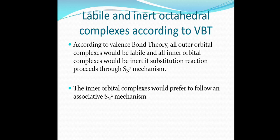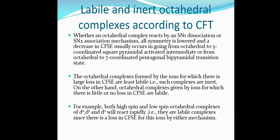Since inner orbital complexes do not prefer to dissociate, they will instead prefer to associate. That is why inner orbital complexes prefer to follow an associative SN2 mechanism. The metal-ligand bonds in inner orbital complexes are stronger, so they will always favor the associative pathway. That is how we understand lability and inertness according to valence bond theory.